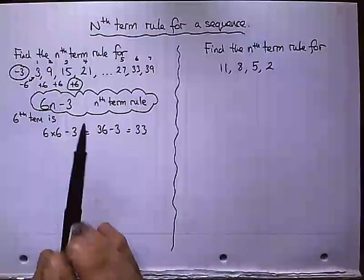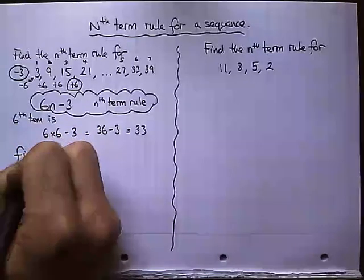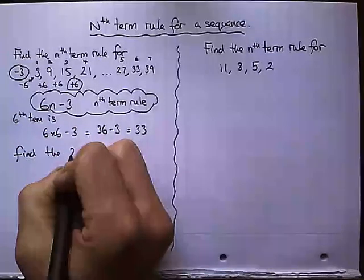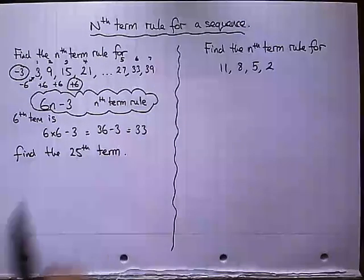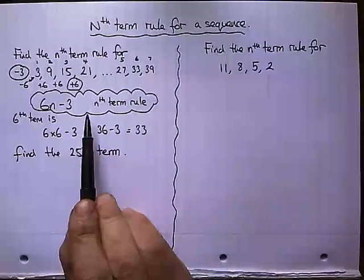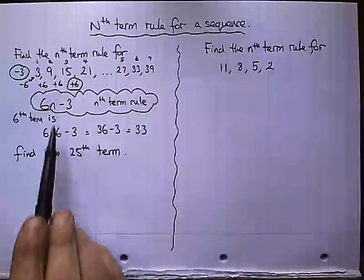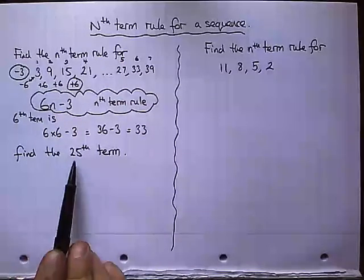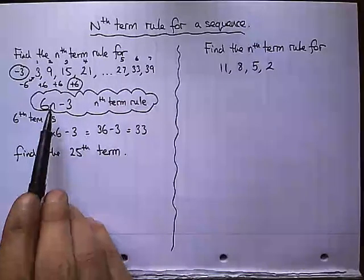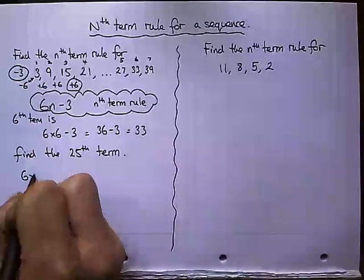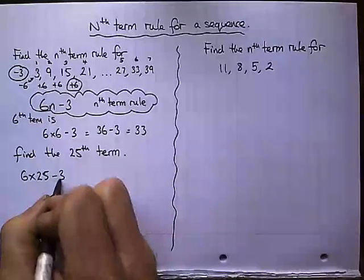So on top of this, they might set you a slightly harder question. They might say, find the 25th term. So we can use our nth term rule. Remember to find the sixth term, we just did a substitution of 6. So to find the 25th term, we do a substitution of 25. So 6 times 25, don't forget the minus 3.